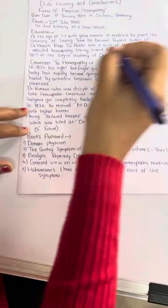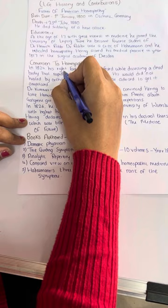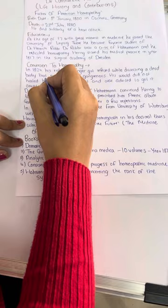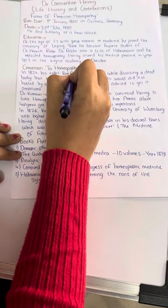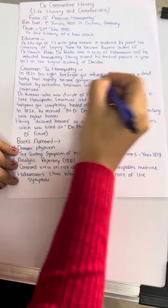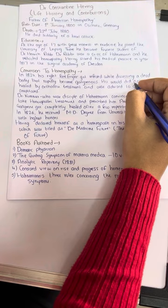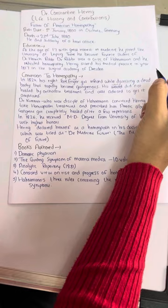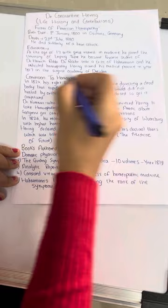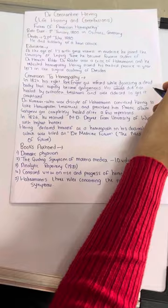In 1824, Dr. Constantine Herring on his right forefinger got infected while dissecting a dead body that rapidly became gangrenous. His wound did not heal by orthodox treatment and was advised to get amputated. He tried all the modern and conventional treatment but it did not get healed, so he was advised amputation.